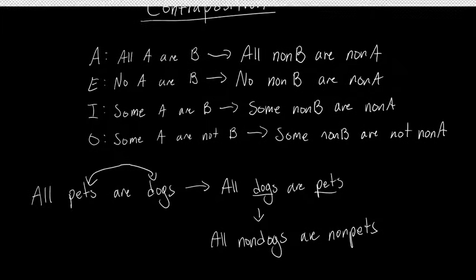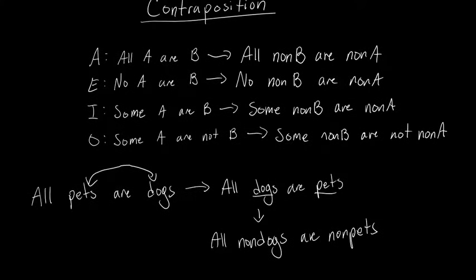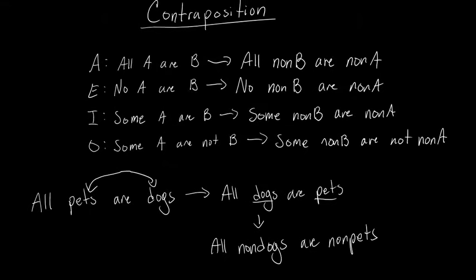And then you're going to go ahead and get the complement of both the subject and the predicate, to get 'all non-dogs are non-pets'. And that's all there is. I think obversion is the trickiest one because you have to switch the type of statement you're dealing with, whereas conversion and contraposition let you stay with the same type of statement — A, E, I, or O.